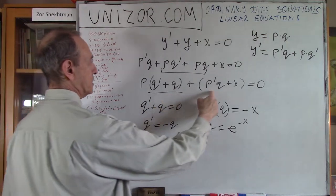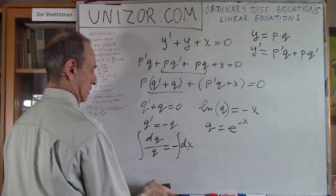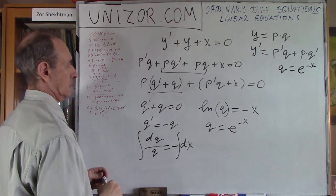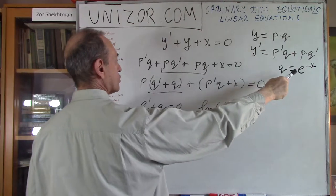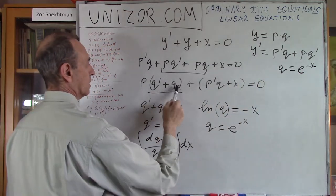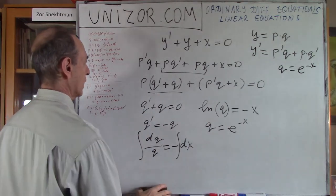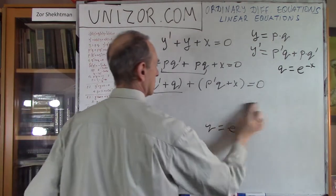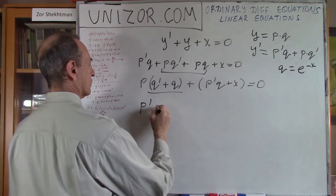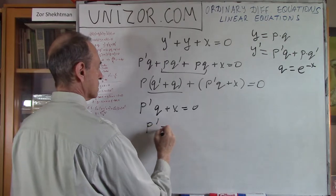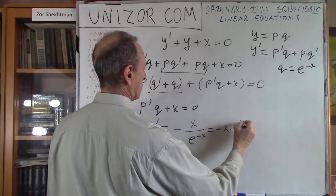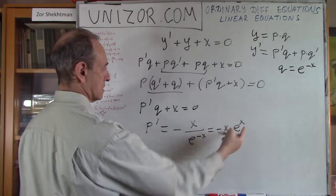Now let's find p by equating the remaining part to zero. Let me put q equal to e to the power of minus x and check: its derivative is minus e to the power of minus x, plus q which is e to the power of minus x — that's zero, so it checks. So now, let's solve the second part for p. We have p'q + x = 0, so p' equals minus x divided by e to the power of minus x, which equals minus x times e to the power of x, since 1 over e to the power of minus x is just e to the power of x.